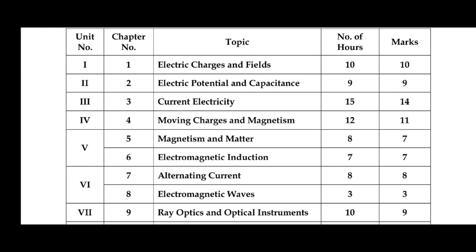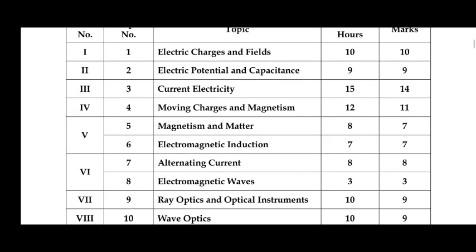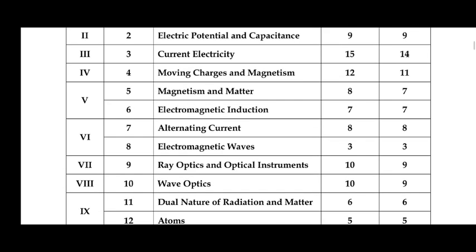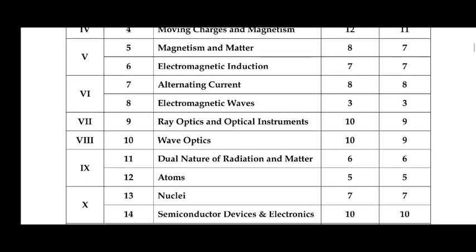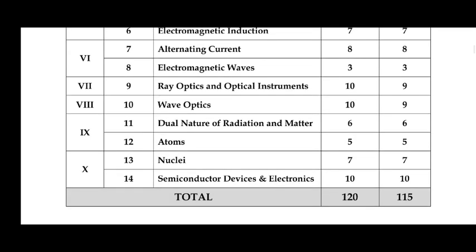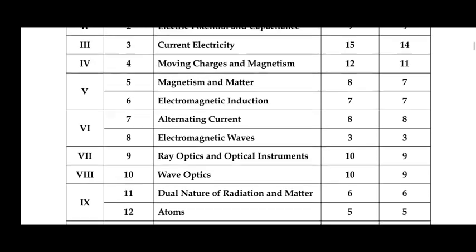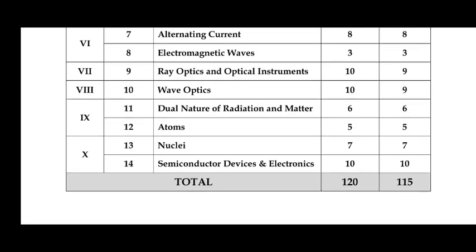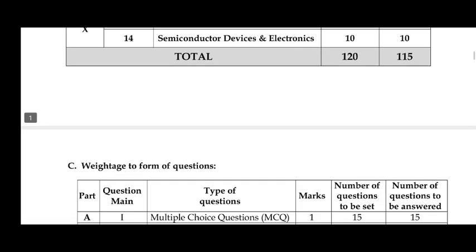Electric Potential and Capacitance has 9 marks, Current Electricity 14 marks, Moving Charges and Magnetism 11 marks. Like that, every chapter clearly shows how many marks they have. You can see and prepare accordingly.